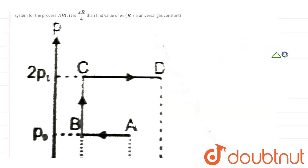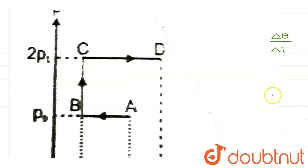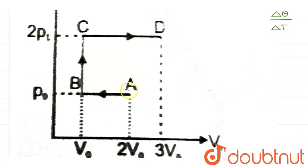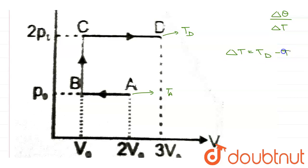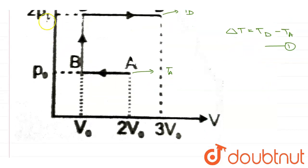The average molar heat capacity is given by ΔQ upon ΔT — that means the total heat exchanged during the process divided by the change in temperature. In this particular process, the initial temperature is TA and the final temperature is TD, so ΔT equals TD minus TA. Let's call this equation number 1.